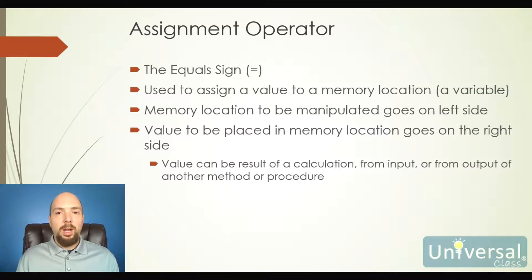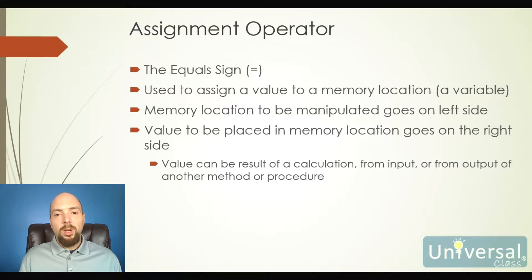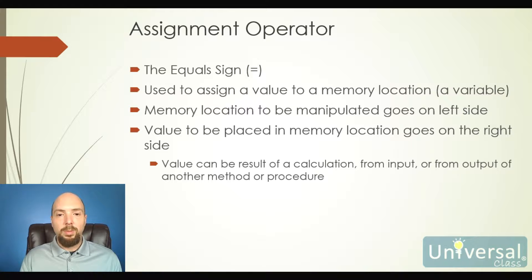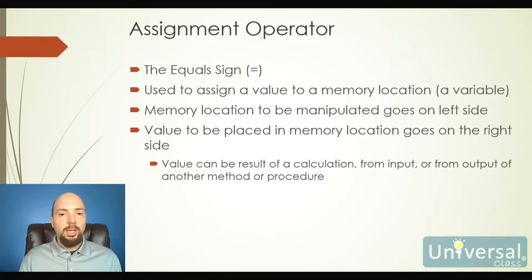When we're writing our programs, we're going to start using assignment operators. An assignment operator is just simply the equal sign — we're going to set something equal to something else. This is used to assign a value to a variable location. Whatever memory location we want to change goes on the left side of the equal sign, and whatever we want to do to that memory location goes on the right side. The right side could be a calculation or a literal value.